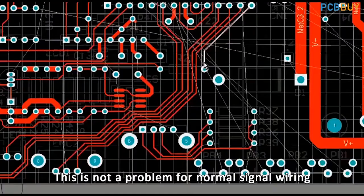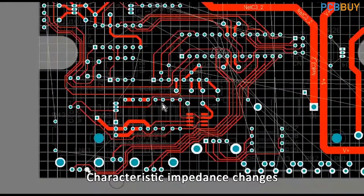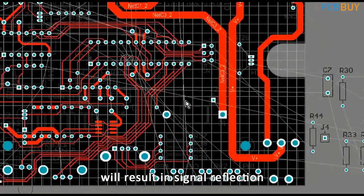This is not a problem for normal signal wiring, but for high-speed transmission lines, characteristic impedance changes will result in signal reflection.